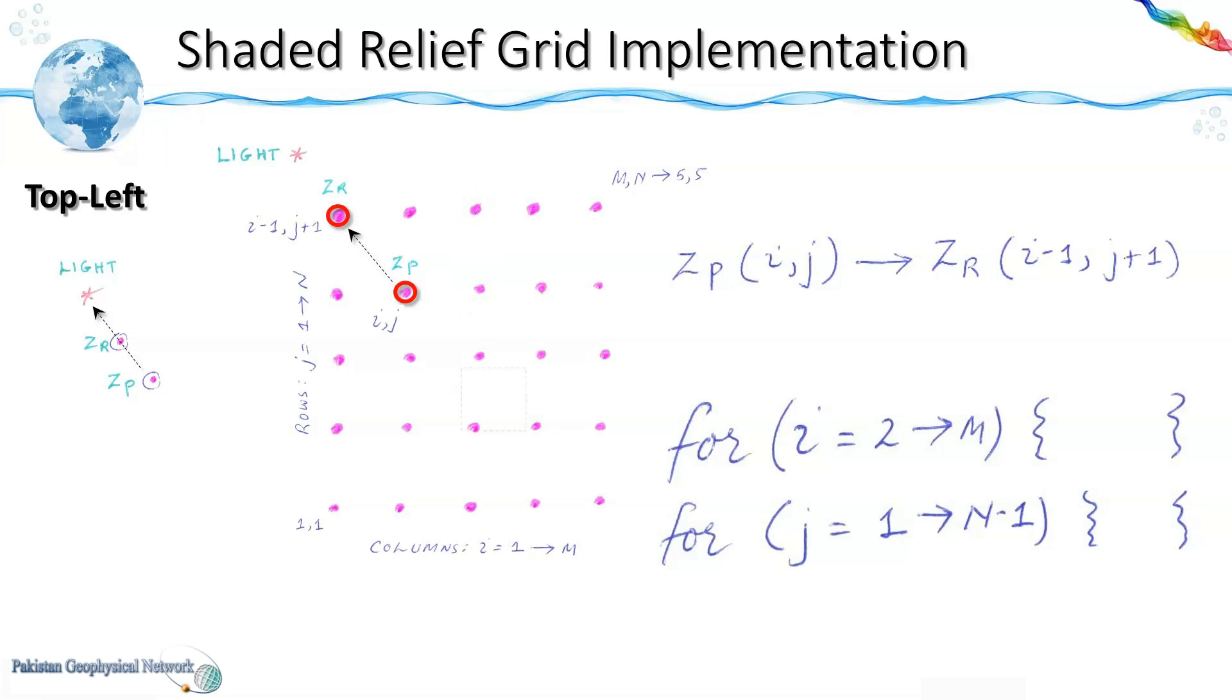So in this way shaded relief would be computed only at the nodes enclosed by this green box. While the nodes outside this box on the left side and on the top side shaded relief would not be computed. And here we would get an edge effect but this would be compensated by assigning these nodes the values of their nearest adjacent nodes inside the box.